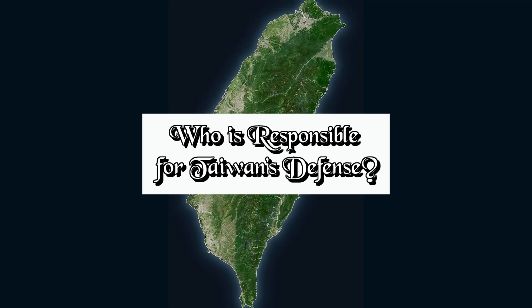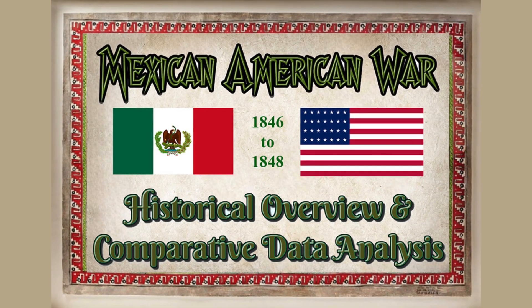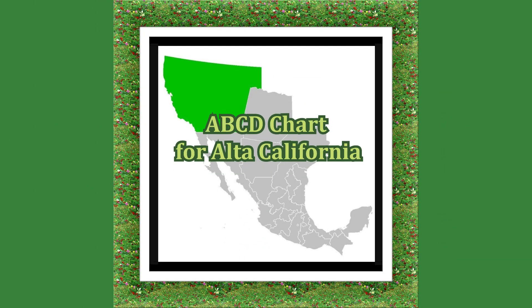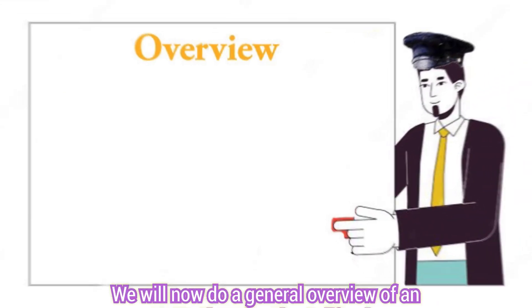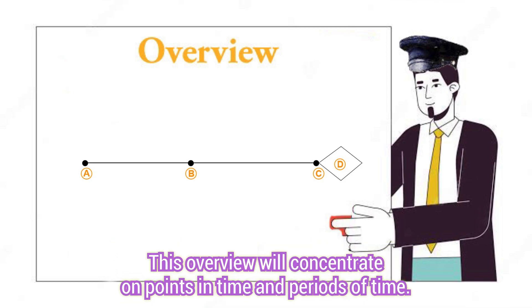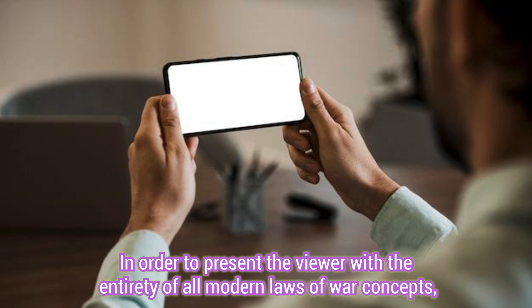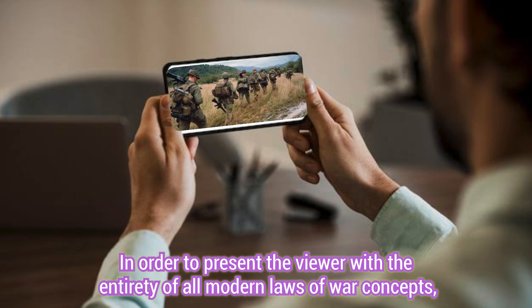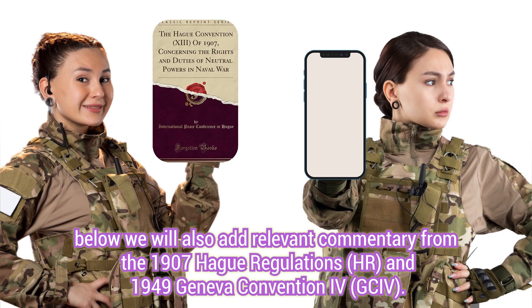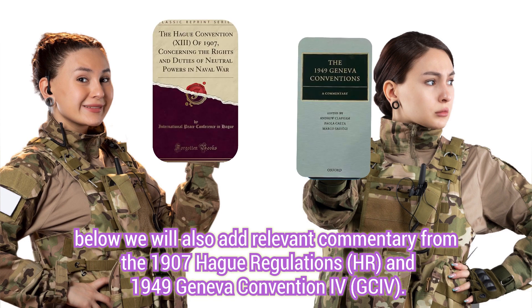Who is responsible for Taiwan's defense? Part 94. The Mexican-American War. We will now do a general overview of an ABCD chart for Alta California. This overview will concentrate on points in time and periods of time. In order to present the viewer with the entirety of all modern laws of war concepts, we will also add relevant commentary from the 1907 Hague Regulations (H.R.) and 1949 Geneva Convention 4 (GC4).